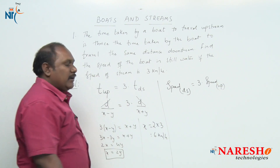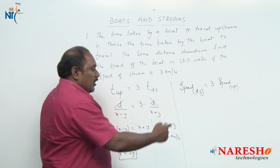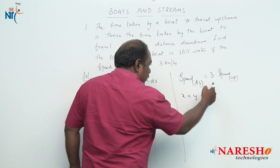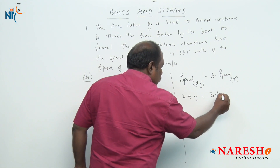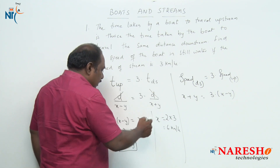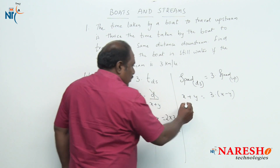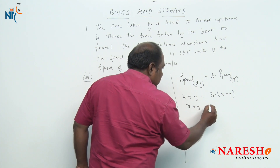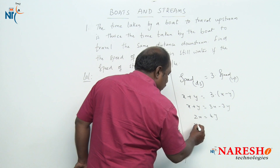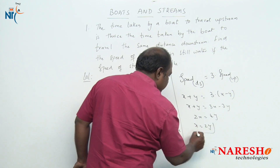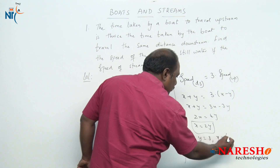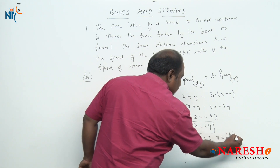This is when distance is constant. Speed downstream (x plus y) equals 3 times speed upstream (x minus y), which gives 3x minus 3y, so 2x equals 4y, or x equals 2y. If y equals 3, then x equals 6 kilometers per hour.